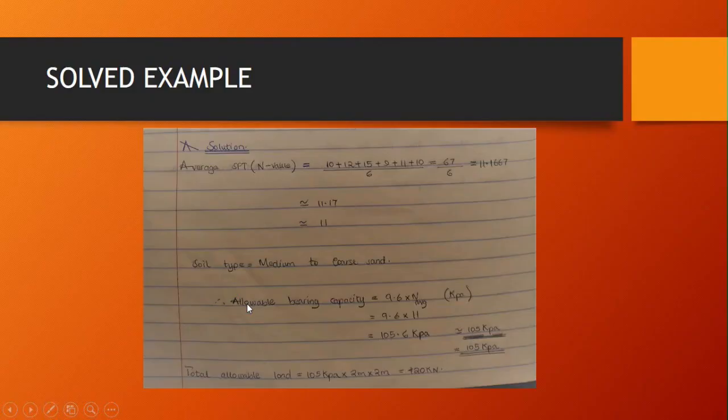So average SPT value we call it 11.17, which is approximately 11. So that is medium to coarse sand. So allowable bearing capacity would be 9.6 multiplied by N average. So 9.6 by 11 you get 105.6, which is approximately 105 kPa, which is 105 kilopascals.